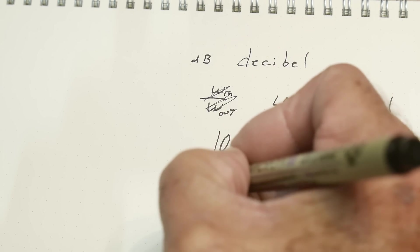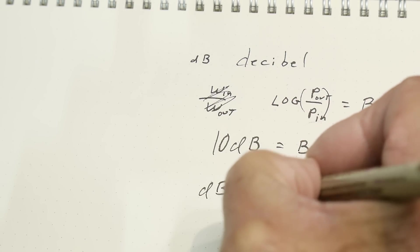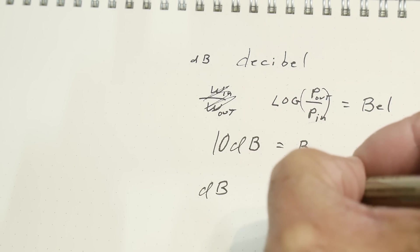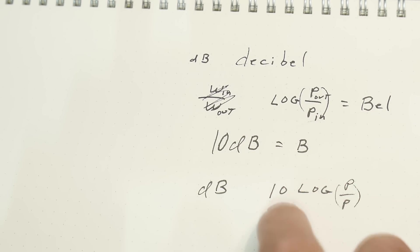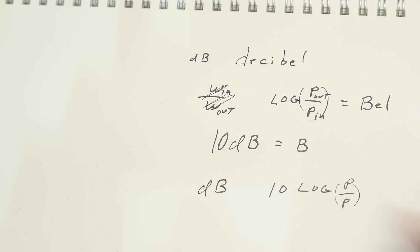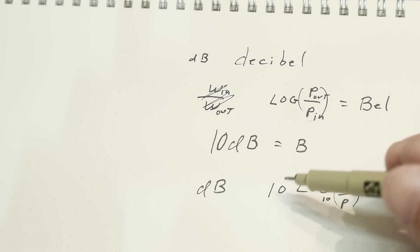The formula is dB = 10 log of power over power, and that 10 is this 10 over here. This is log base 10.